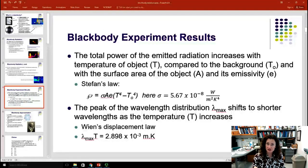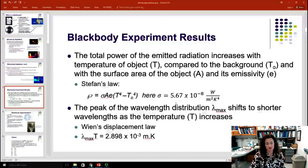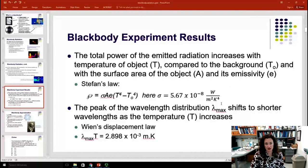This said that the total power of the emitted radiation increases with the temperature of the object T, compared to the background temperature T_0, and with the surface area of the object A, and its emissivity E. Here's Stefan's law. The power P is equal to σAE, and then T to the fourth minus the background temperature to the fourth. Here σ is a constant, 5.67 times 10^-8 watts per meter squared Kelvin to the fourth in SI units.